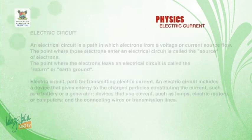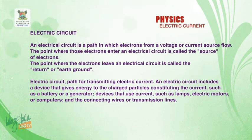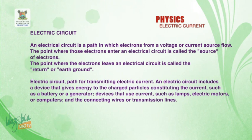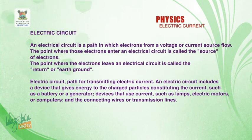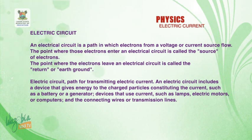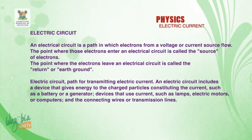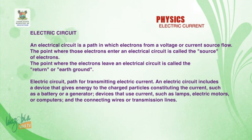Welcome back. We want to look at electric circuits. An electric circuit is a path in which electrons from a voltage or current source flow. The point where those electrons enter an electric circuit is called the source of electrons. The point where the electrons leave an electric circuit is called the return or ground. An electric circuit is the path for transmitting electric current.